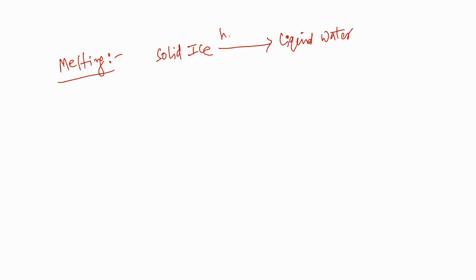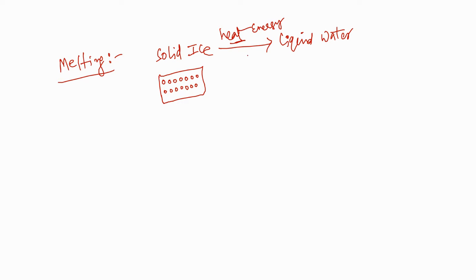The solid ice absorbs heat energy from the surroundings. In solid ice, the particles are very close to each other. When the solid ice takes heat energy from the atmosphere, it automatically converts into liquid water with the help of that heat energy.